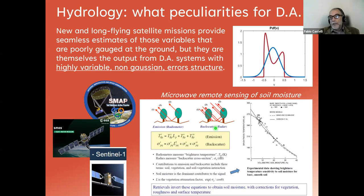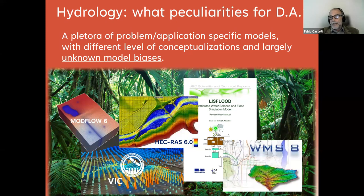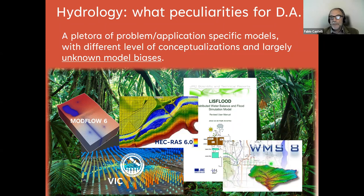A last peculiarity: contrary to atmospheric sciences, there is not yet what we may call a holistic hydrologic model. Atmospheric scientists for weather prediction use models that are quite similar to one another, sharing the same guiding principles. Hydrologic modeling instead is a jungle of problem-specific models — there may be a specific model for groundwater flow, a specific model for river flows, for hydrologic response at watershed scale, for global scale. So moving from one model to another, model characteristics and error structures may also change dramatically.